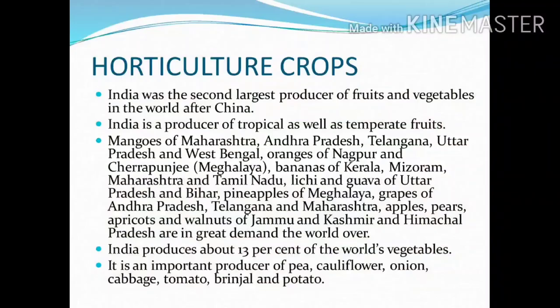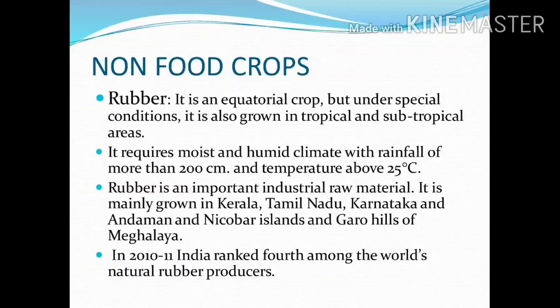Now let us see non-food crops. Rubber is an equatorial crop, but under special conditions it is also grown in tropical and subtropical areas. It requires moist and humid climate with a rainfall of more than 200 cm and temperature of about 25 degree Celsius. Rubber is an important industrial raw material. It is mainly grown in Kerala, Tamil Nadu, Karnataka, Andaman and Nicobar Islands, and the Garo Hills of Meghalaya. In 2010-11, India ranked 4th among the world's natural rubber producers.